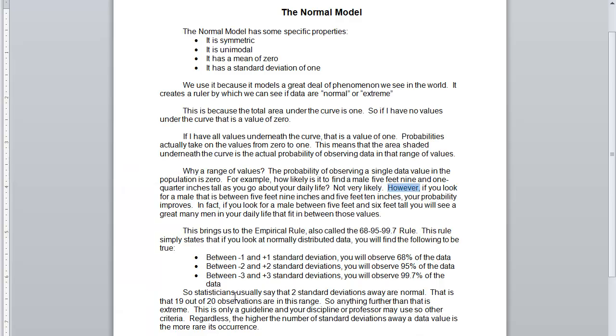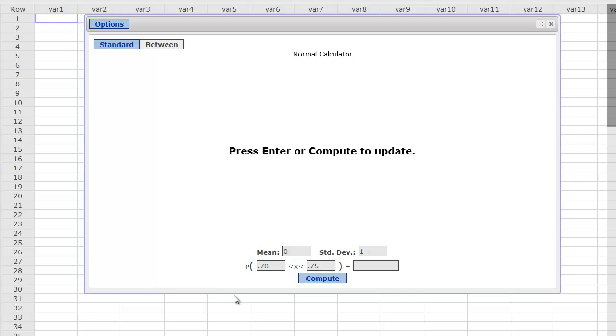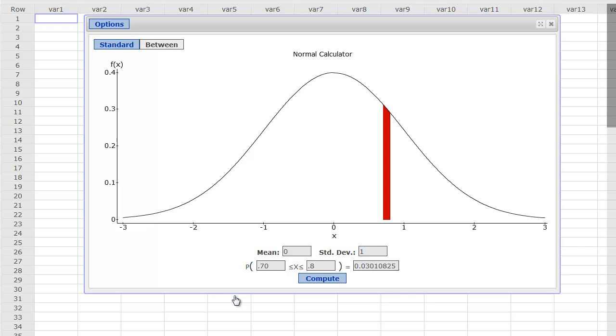What we have to do, however, is if you look for a male that is between 5'9¼ inches and 5'10 inches, then your probability actually improves. Now instead of just looking at that one narrow range, I'm going to go from 5'9 to 5'10, and let's say that's between 0.7 and 0.8 standard deviations. You can see I've got this very thin line right here, this very narrow range, and that's about 3% of males that I would run into that would be that particular height. So I'd be looking for a long time, but I wouldn't be looking forever.